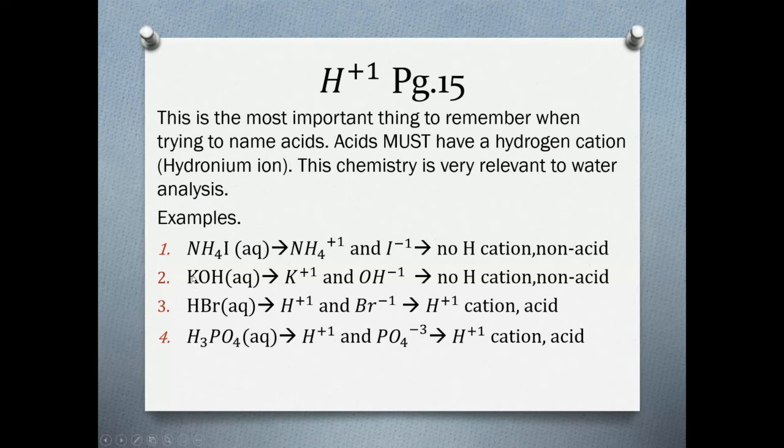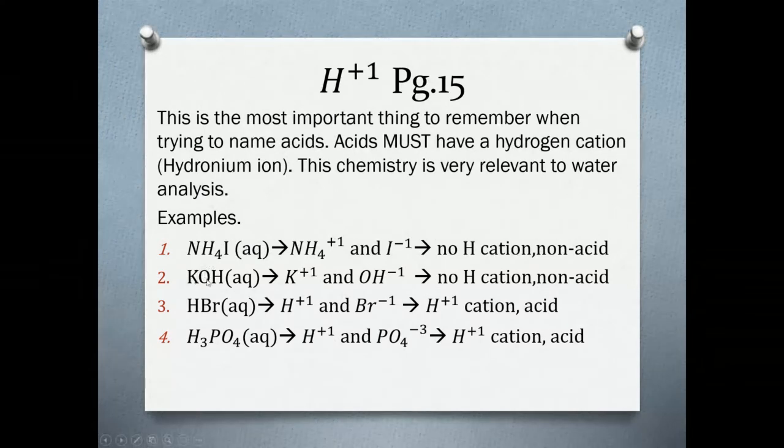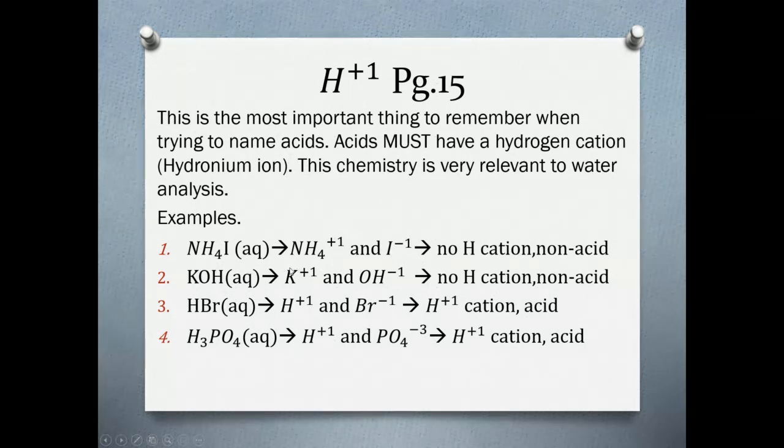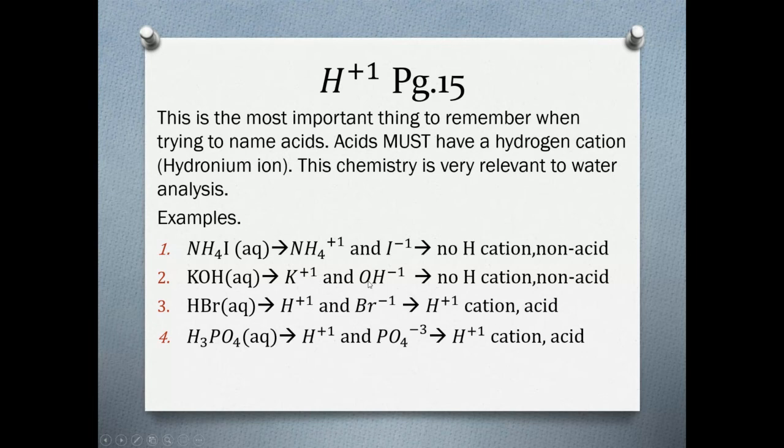Example number four, H3PO4. This is a polyatomic ion called phosphate. This is three hydroniums. What do we have here? We have hydroniums, absolutely, and we have phosphate. So we have a hydronium cation, so it is definitely an acid. Does it have oxygen in it? Sure it does. So this is phosphoric acid.